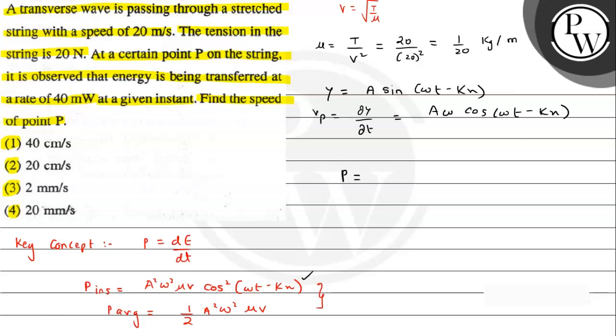power can now be written as A squared omega squared cosine squared omega t, which gives us mu into v into vp squared. From this situation, we have the instantaneous power value also been given.